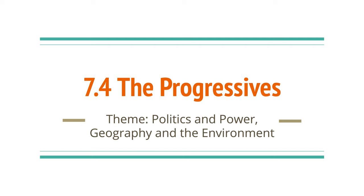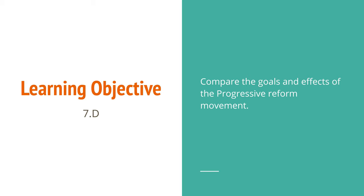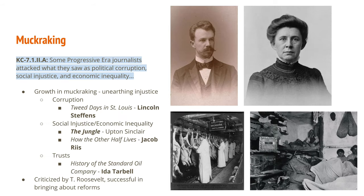Welcome back to another lecture. This is 7.4 The Progressives. We have two themes today: politics and power, and geography and the environment. We also have two learning objectives. The first is to compare the goals and effects of the progressive reform movement. There's going to be a lot of information in this slideshow — the College Board jam-packed this historical topic — so we'll do our best to get through it.